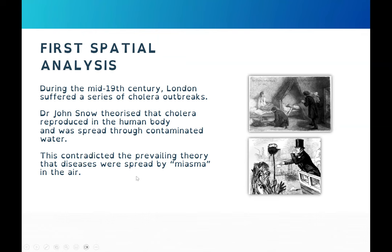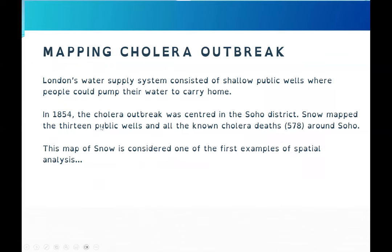This contradicted the prevailing theory that diseases were spread by miasma in the air. Regarding the mapping of the cholera outbreak by John Snow: London's water supply system consisted of shallow public wells where people could pump water. In 1854, there was a cholera outbreak in the Soho district, London's central city. Snow mapped 13 public wells and all the known cholera deaths, around 578, around Soho. This map by Snow is considered one of the first examples of spatial analysis.